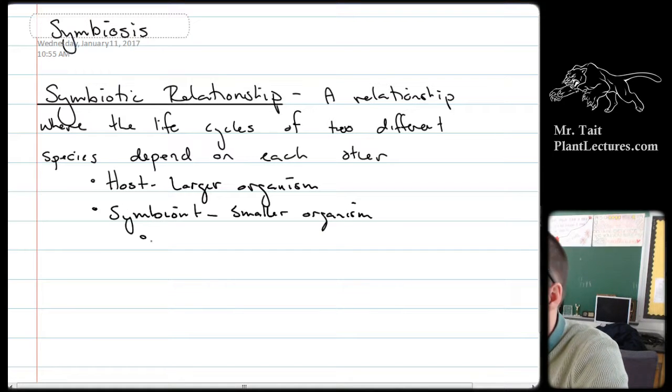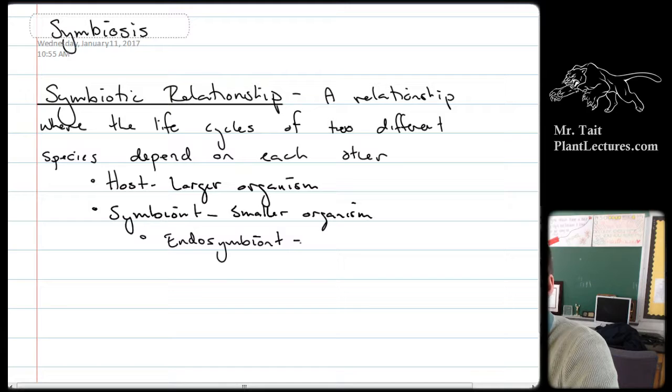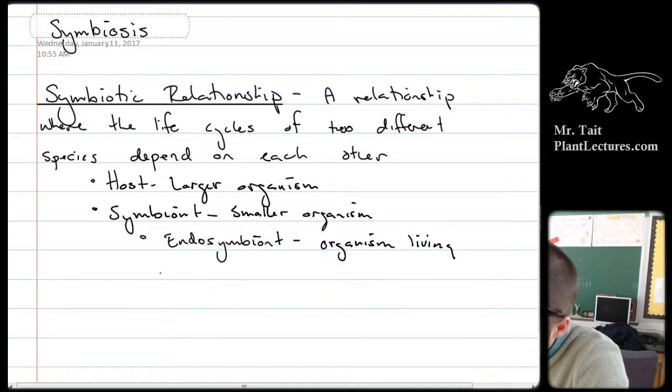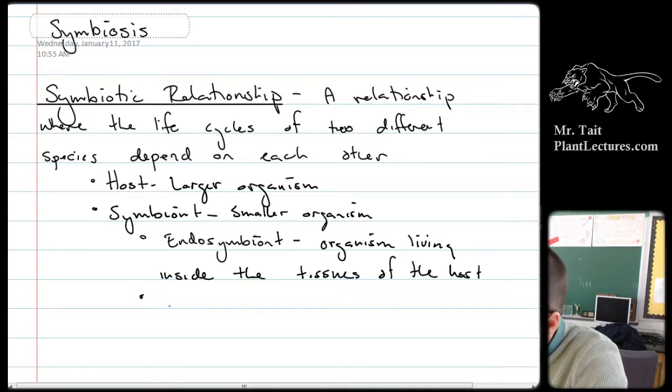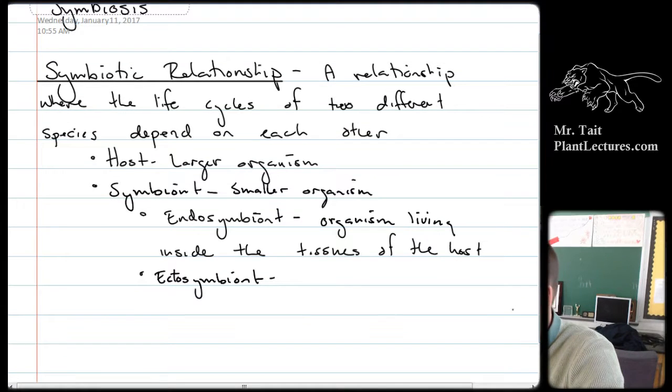There are two types of symbionts. The first type is called an endosymbiont, which means that it's living inside the tissues of the host. And then the other one is called an ectosymbiont, which means the organism is living outside of the tissue.